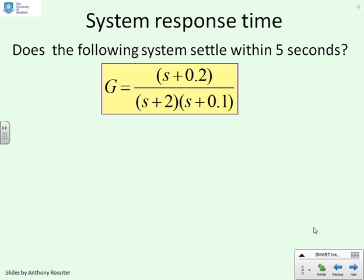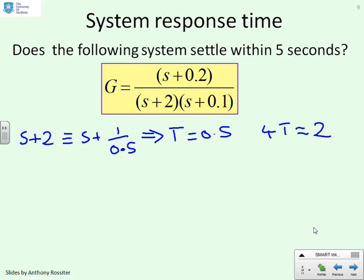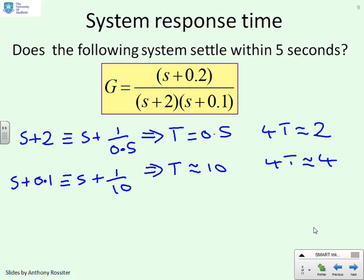Now a slightly more challenging one. What do you do if you get something like this? And you can see s plus 2 is going to be equivalent to s plus 1 over 0.5. Which gives you a time constant of 0.5. And therefore 4T is approximately 2. OK. So we expect that particular mode to settle in about 2 seconds. That's under 5. We're saying, yeah, good so far. But what about this one? The s plus 0.1 is going to give you s plus 1 over 10. So that implies that T is approximately 10. Or 4T is approximately 40. So you have a problem here. You've got one mode that settles fast. And one mode that settles slow.